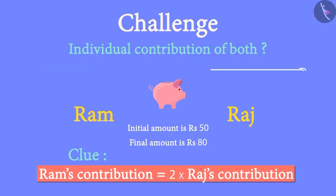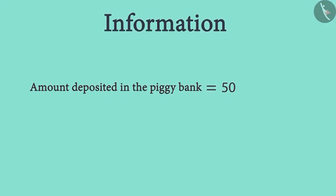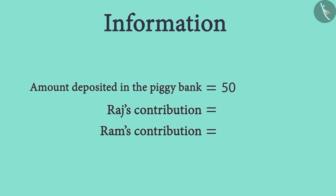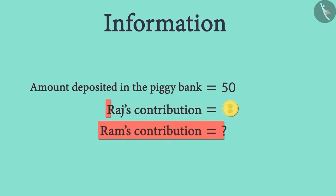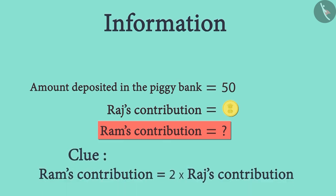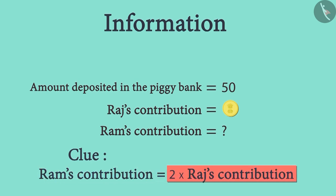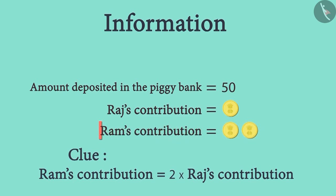Let us try to write the information that is given to us. We know that the piggy bank already has 50 rupees. Ram and Raj deposited some money in it, but we don't know how much they contributed separately. Let us place one coin as a symbol to represent Raj's contribution. Since Ram contributed exactly double the amount of Raj, let us place two coins to represent Ram's contribution.